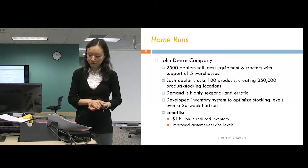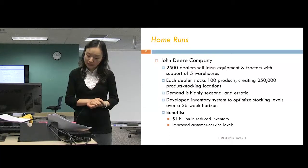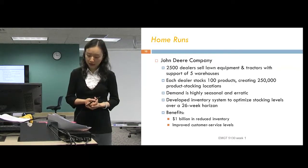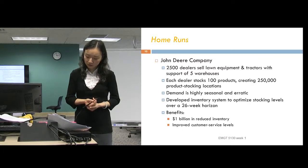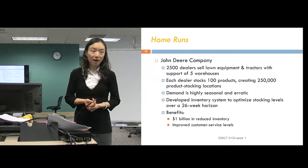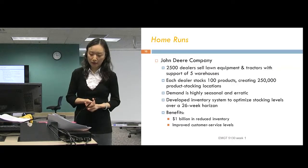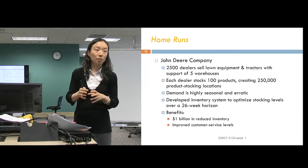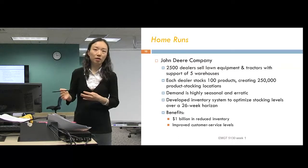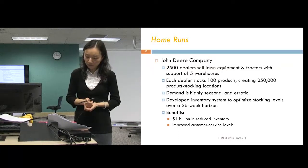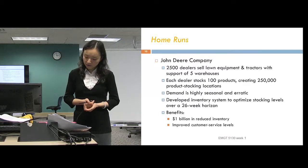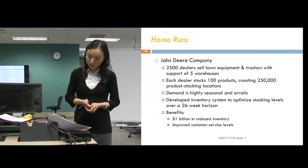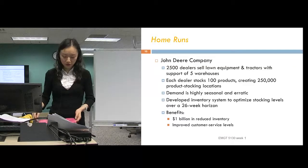John Deere Company, another company you are really familiar with. They have 2,500 dealers selling their lawn equipment and tractors. And these are all stored in five warehouses. And each dealer stocks 100 products, creating 100 times 2,500, which is 250,000 product stocking locations. And the demand is really seasonal and erratic. Remember, we talked about in broad OR, statistics and forecasting as one part. So here, the seasonal and erratic demand, to solve that problem, you need statistical analysis. Also involving the basic operations research, they developed this inventory system to optimize stocking levels over 26-week horizon. And the benefit is $1 billion in reduced inventory. Again, very significant. And also improved the customer service levels.